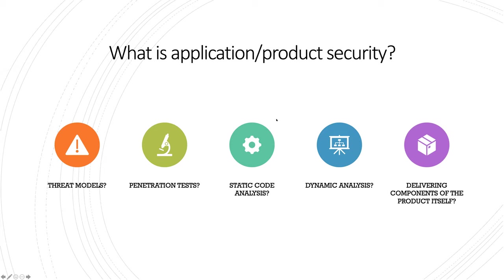So what is app security? It is a specialized security field. It can mean a number of different things and it takes different forms at different companies. You might be threat modeling, pen testing, doing some SAST or DAST things, or even delivering components of the product itself with varying levels of success and engagement. It could be any one of those things or a combination — these are the main things you'll see in the app security space.